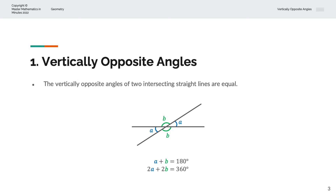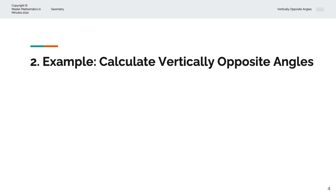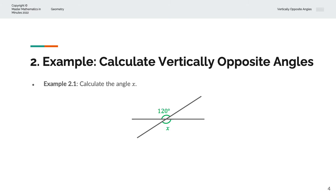Let's consider a couple of examples. In the first example, we're asked to calculate the angle X. We have two intersecting straight lines, and that angle is given as 120 degrees. So X is vertically opposite the angle 120 degrees, and so X must be equal to 120 degrees.